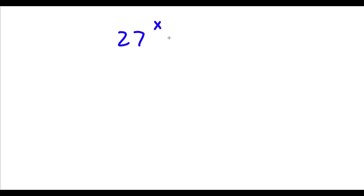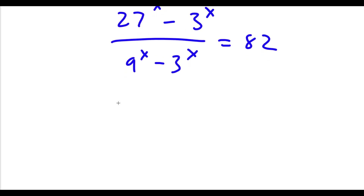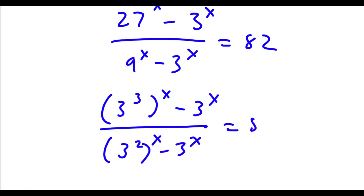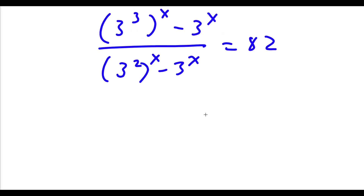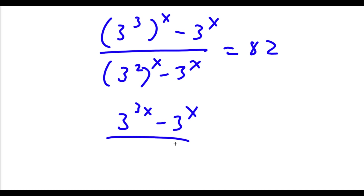So now for our bonus problem, we have 27 to the power of x minus 3 to the power of x divided by 9 to the power of x minus 3 to the power of x, and this is equal to 82. I can rewrite this as 3 to the power of 3 to the power of x minus 3 to the power of x over 3 squared to the power of x minus 3 to the power of x, which gives 3 to the power of 3x minus 3 to the power of x over 3 to the power of 2x minus 3 to the power of x, equal to 82.